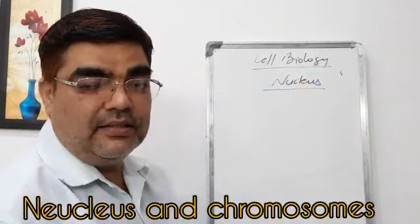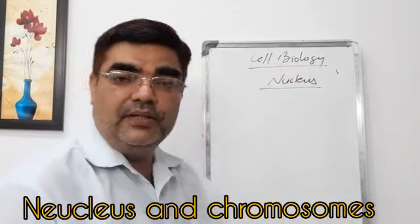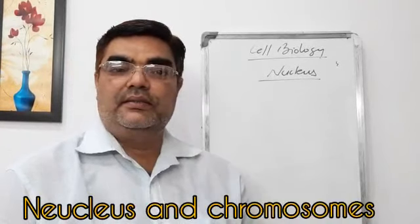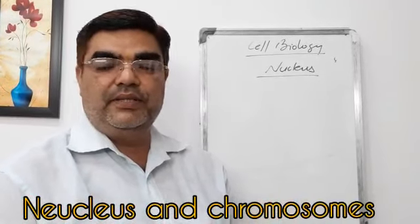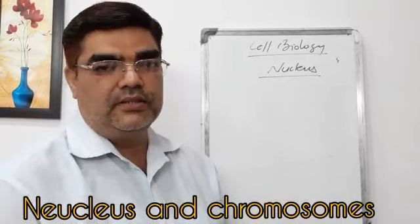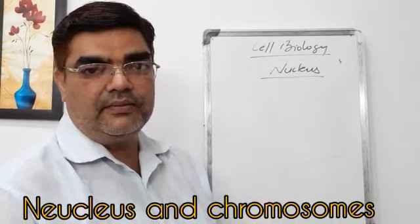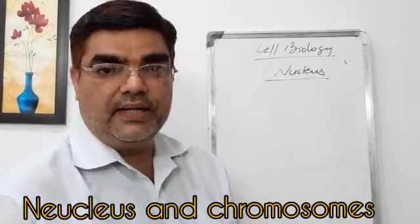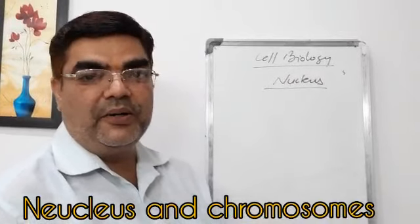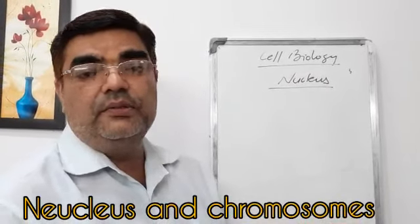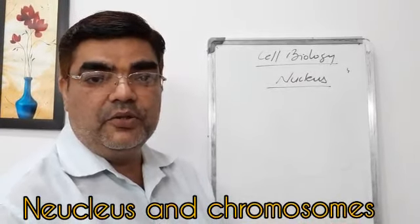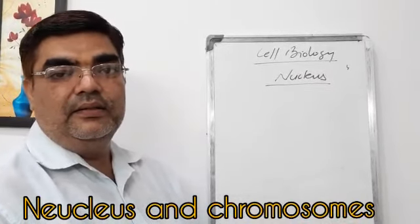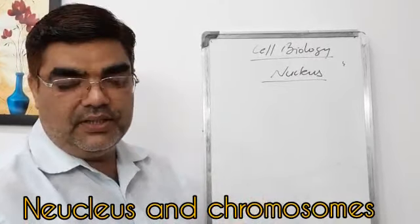Dear students, let's start with the nucleus — today's new topic. The nucleus is the mastermind of the cell; you can see it as the control center of the cell. The nucleus was discovered by Robert Brown, while the cell was discovered by Robert Hooke. Let's discuss the structure of the nucleus.